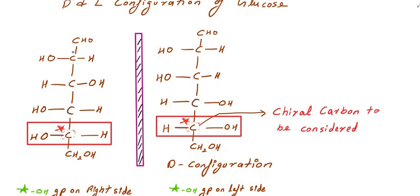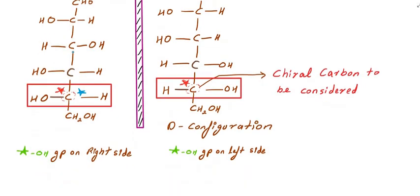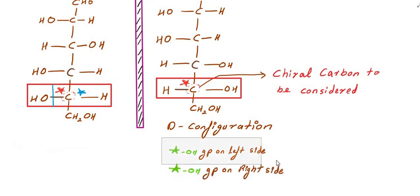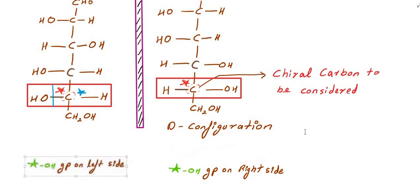Let's compare this with glucose. We consider the chiral carbon. If OH is on the left side, it will have the D configuration. If OH is on the right side, then that is also the D configuration. If OH is on the left side, then it is the L configuration. So OH on the left side gives L configuration, and OH on the right side gives D configuration.